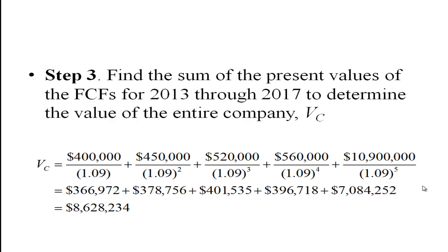What we have to do to find the value of the firm is take the present value of all of these free cash flows. The first year's free cash flow is discounted by one plus the cost of capital, the second year's free cash flow discounted by one plus the cost of capital squared, and so on. If we do that, we get $8,628,234. That's the value of the firm.